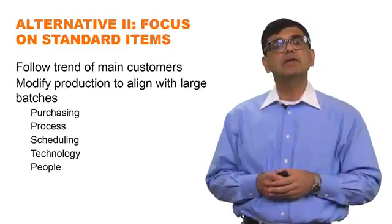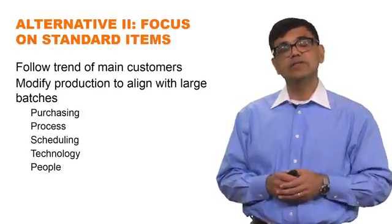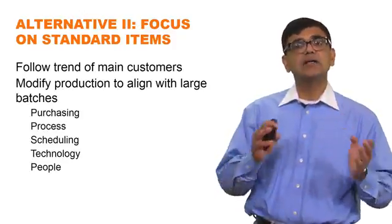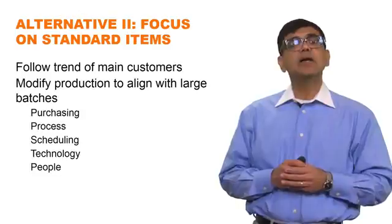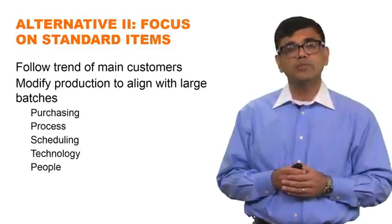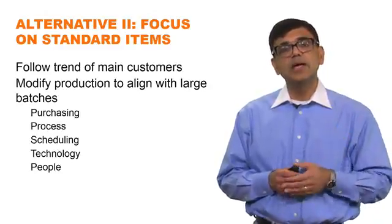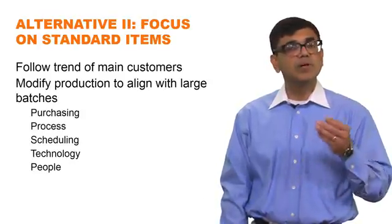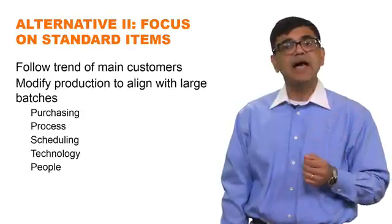The opposite alternative is to completely give up on customization and focus only on the standardized high volume market — no plant-within-a-plant or process hybrid, but a complete shift to high volume. This would require drastic changes not only in production processes but also in purchasing, scheduling, technology, and people. It carries bigger risk by entering a less familiar market, but it remains a legitimate strategic choice.